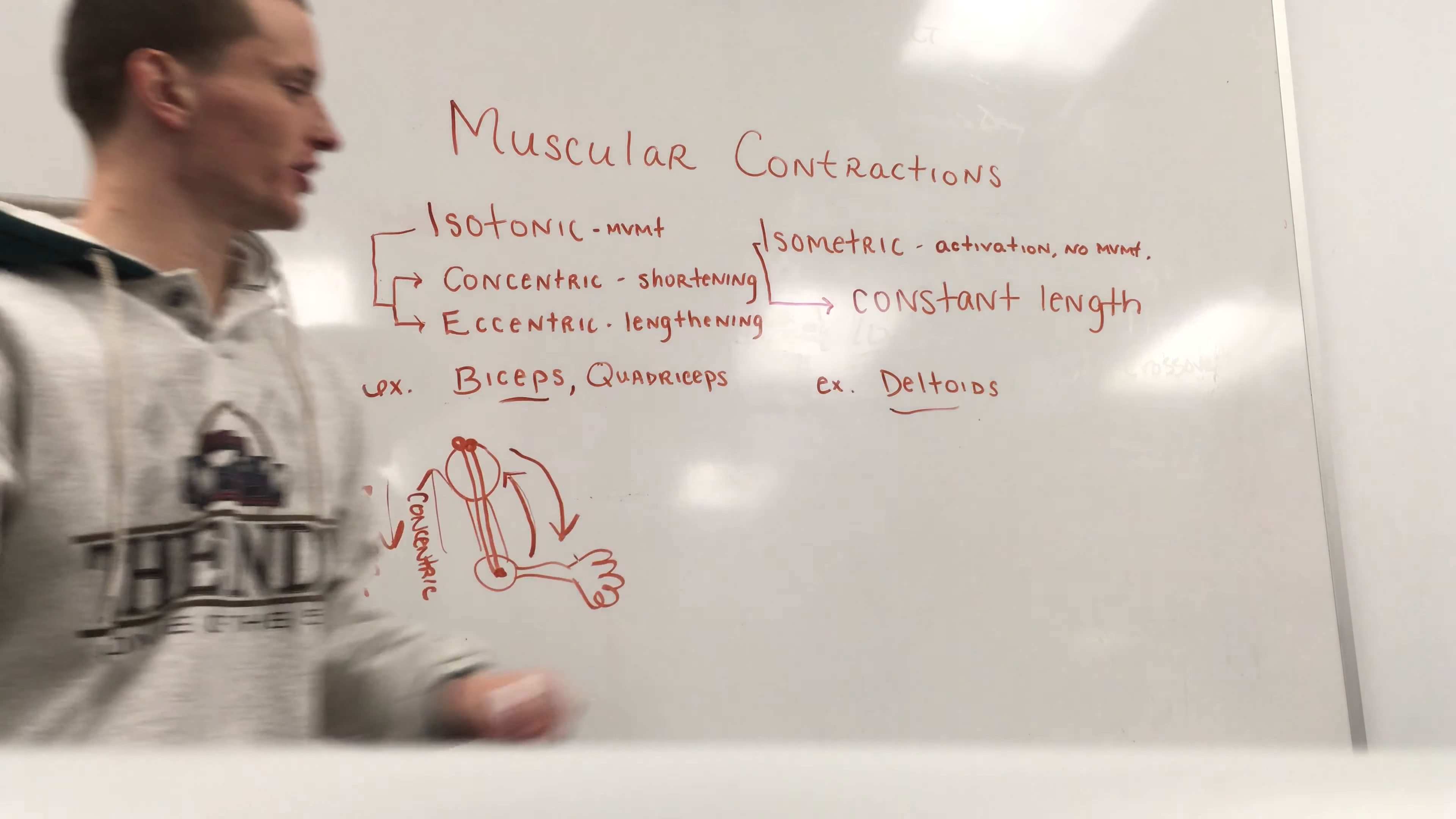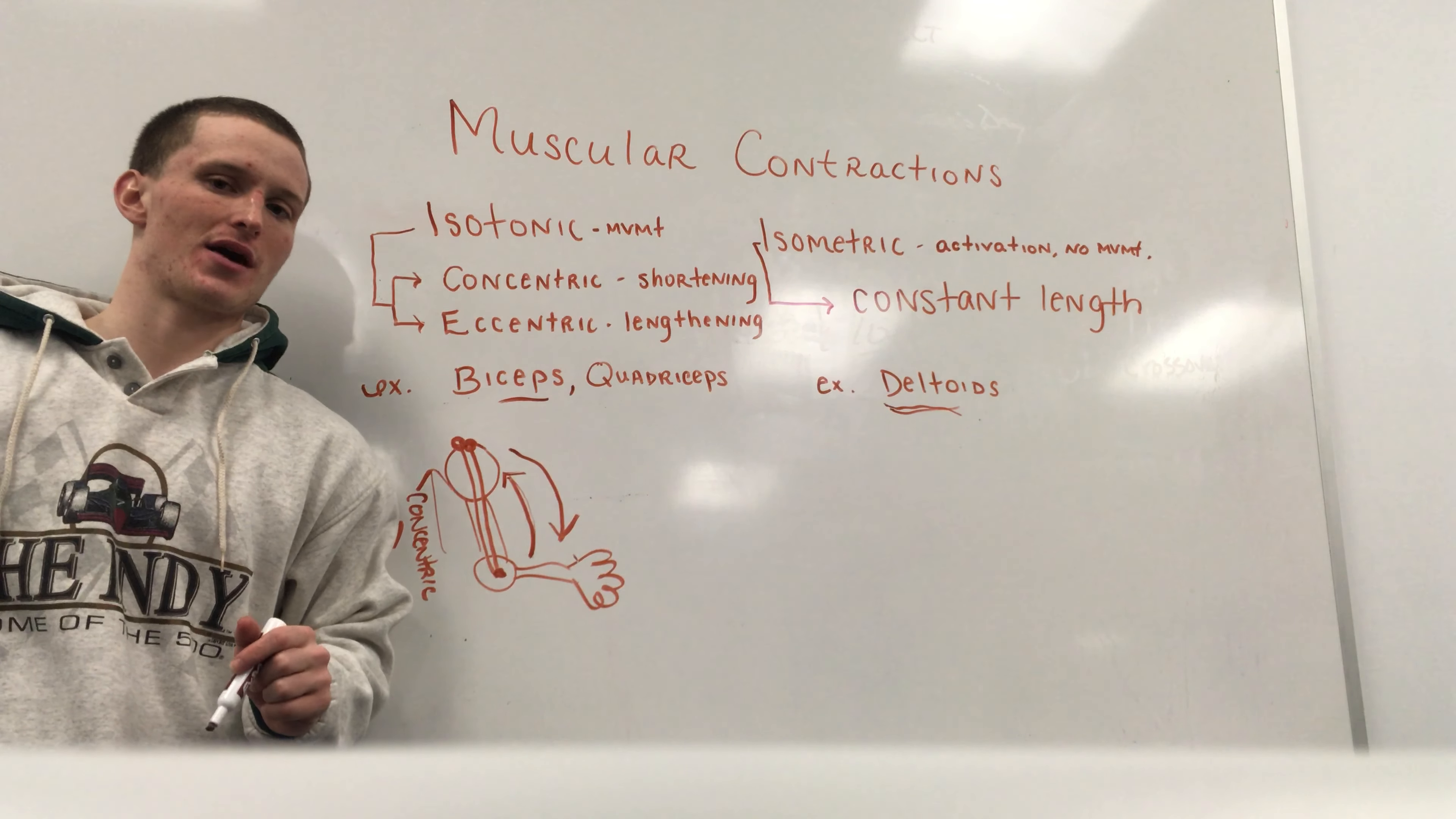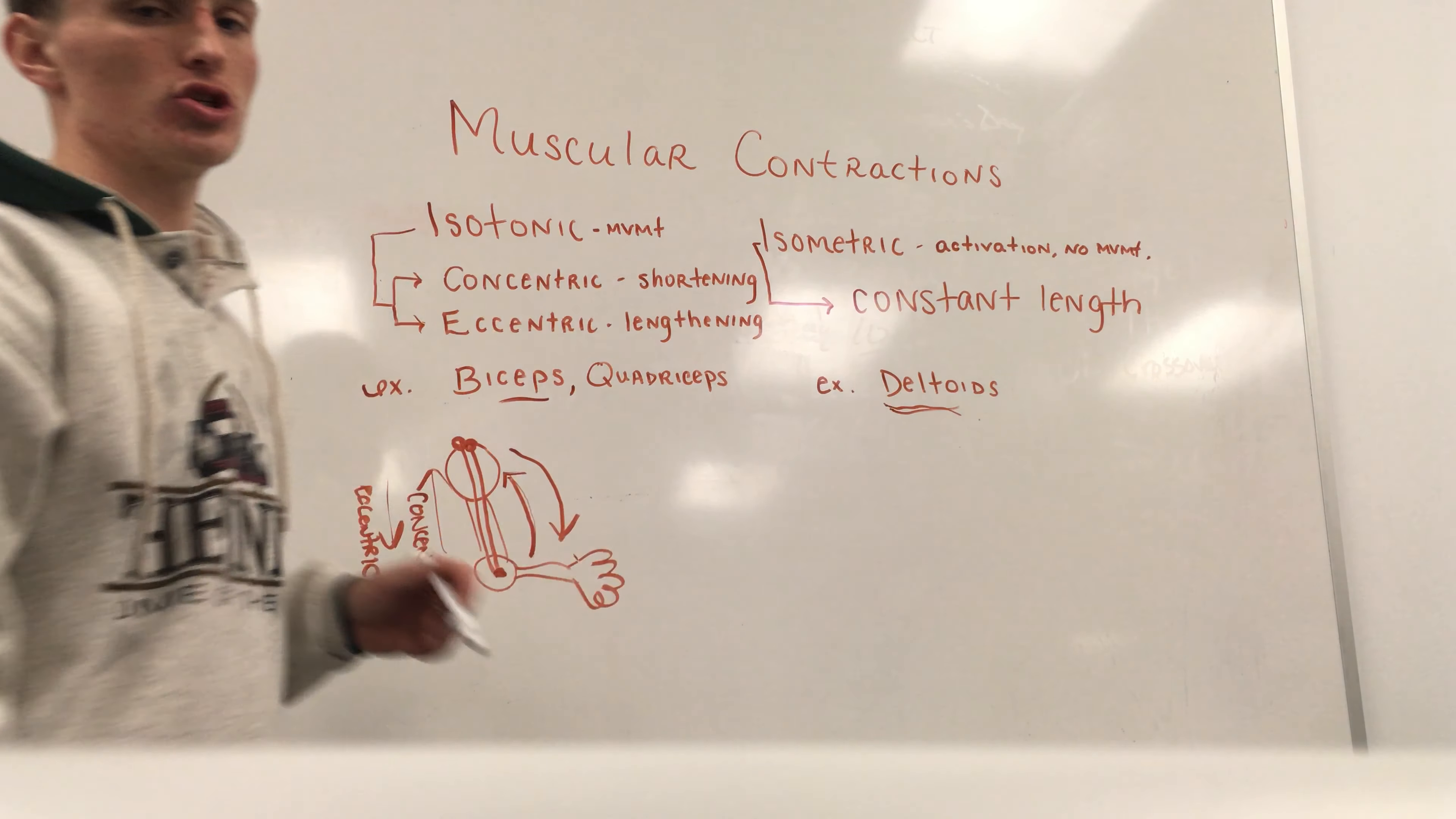With the deltoid, you know that with the isometric contraction, that deltoid tuberosity is not getting any closer to that spine of scapula, because there is no change in length of that muscle, because there is no movement at the joint.